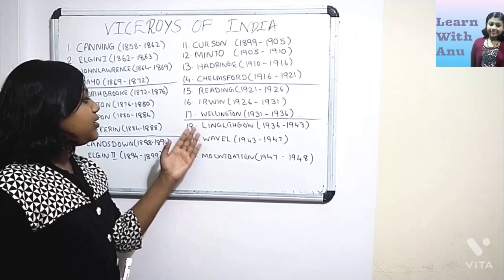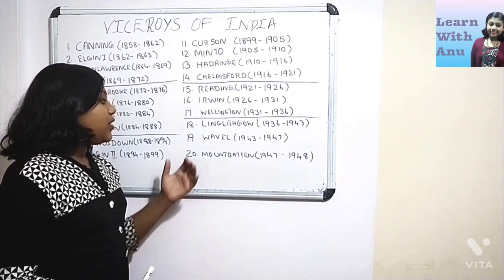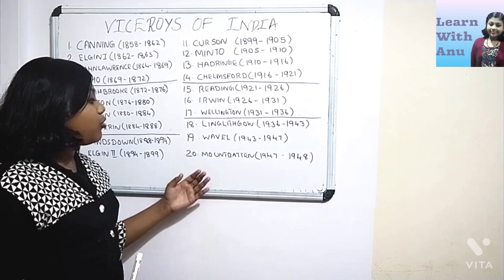Now we have Linlithgow 1936 to 1943, Wavell 1943 to 1947, and at last Mountbatten 1947 to 1948.